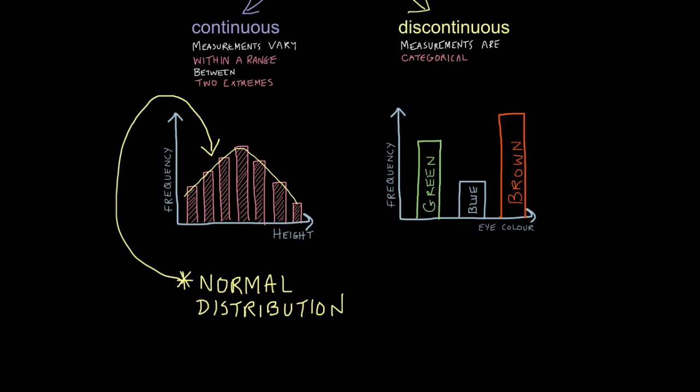So continuous variation or features that vary continuously will often give you this pattern, this kind of up then down pattern. We call this shape a bell curve. And we can also describe it as a normal distribution.